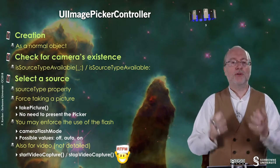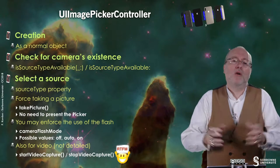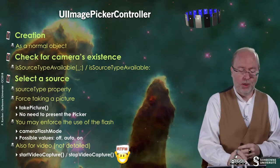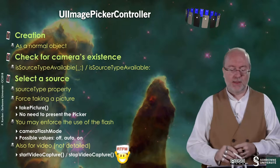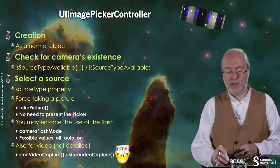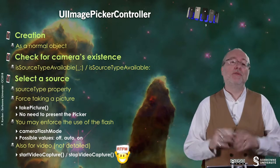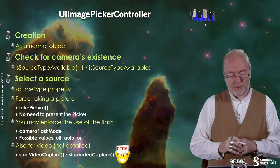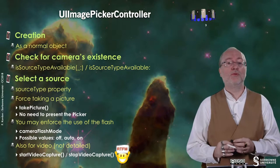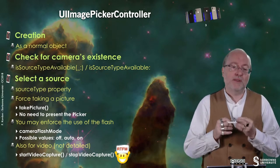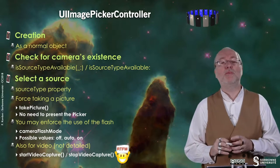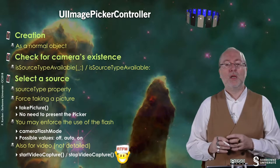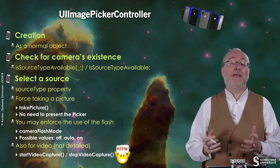Let's have a look at the UIImagePickerController. You create it as you do for a normal object. You should check for the camera's existence using the isSourceTypeAvailable method — the name is the same in Objective-C and Swift. Then you select a source using the sourceType property by assigning a value to it. You can also force taking a picture using a method called takePicture, though I haven't experimented with it — I'm not sure whether you still need to present the picker in that case.